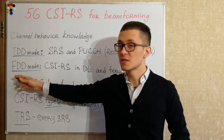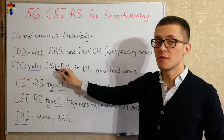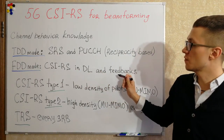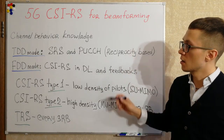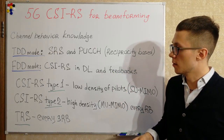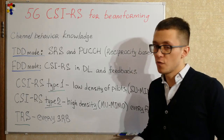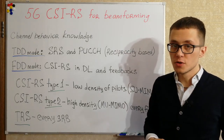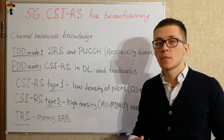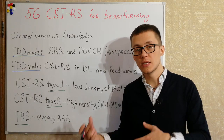The second method is for FDD mode — frequency division duplex mode. This is based on channel state information reference signals transmitted in downlink and feedbacks from user equipment to uplink. Such a method is good for cell edge users and good for estimation of interference from other users. But it requires at least two times more pilots.